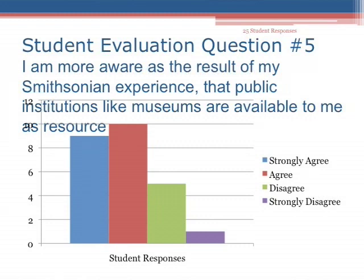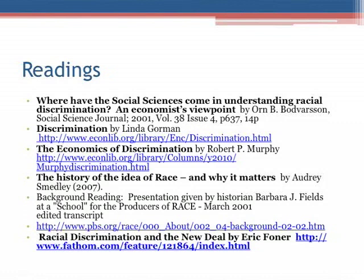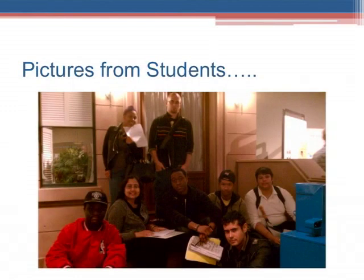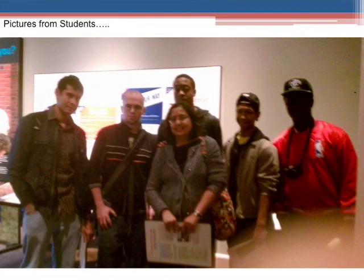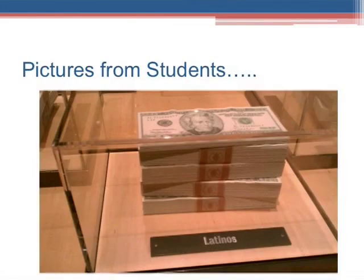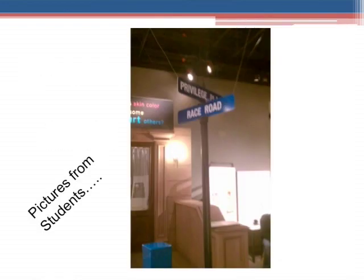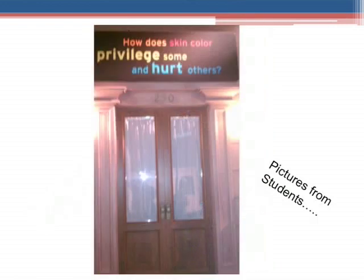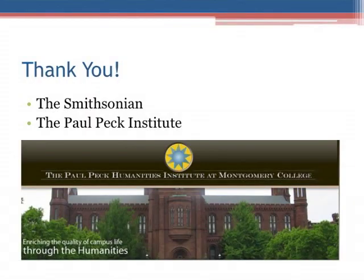These are the different readings we used, and these are some pictures from the visit. I can also show the Jeopardy quiz if there's time — it was a very nice project. It was set up exactly like Jeopardy with questions in different categories: race, government, census, and others — you choose 10 points for race or 20 points for government and so on.